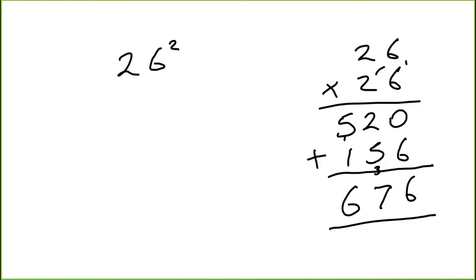But there's a much easier way. So let's just do this again, 26 squared. What you need to do first of all is square the 6. So 6 times 6 is 36, put the 6 down and carry the 3 over here.